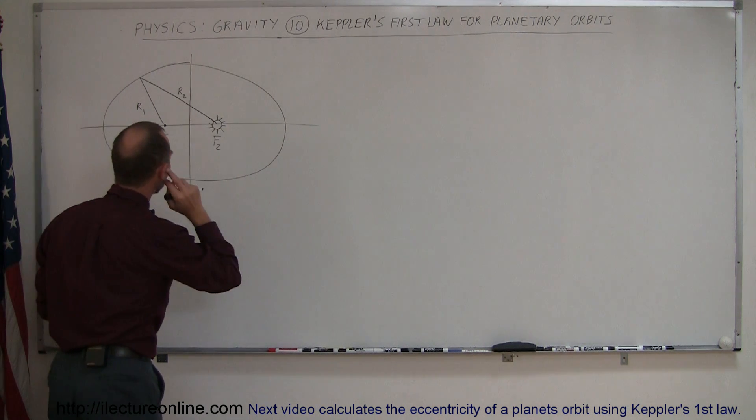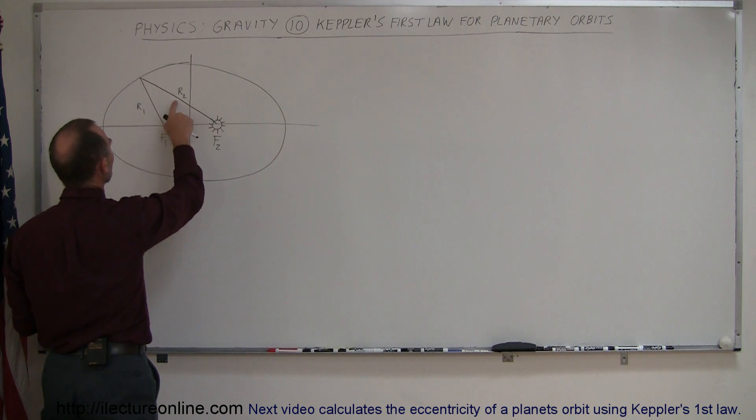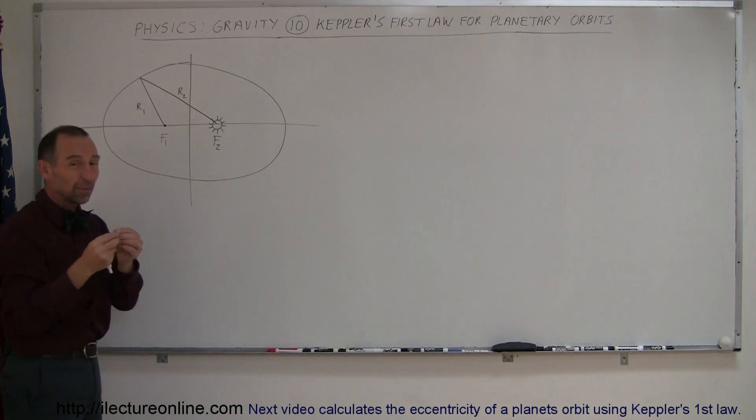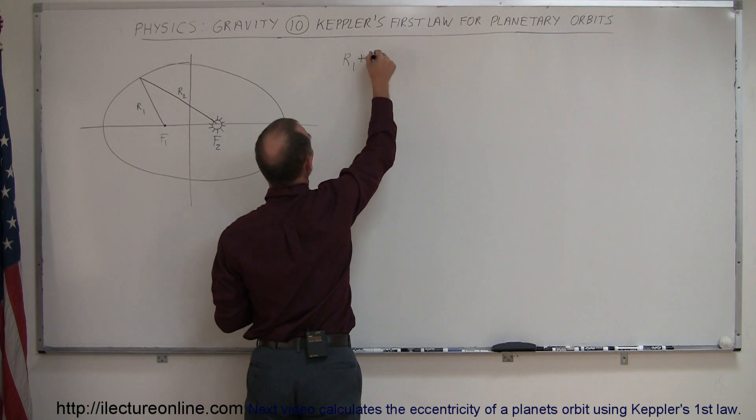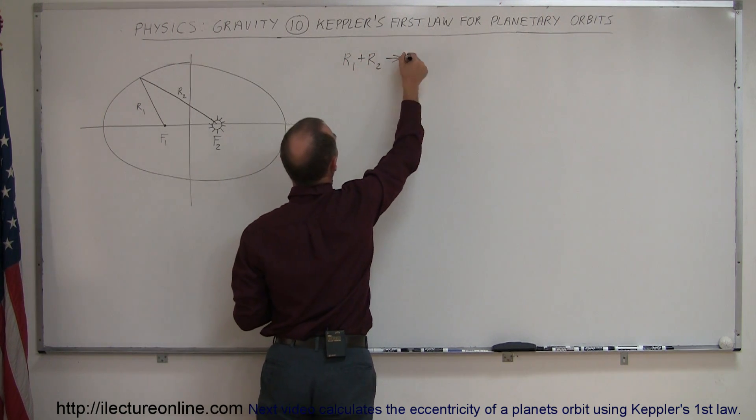Therefore, you can say that R1 plus R2 will always be a constant, because the sum of those two lengths have to be the same. So, we can say that R1 plus R2 must be a constant.